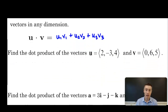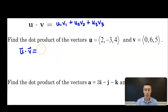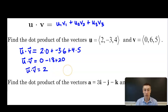Let's look at putting that into practice. Find the dot product of u = (2, -3, 4) and v = (0, 6, 5). The dot product u·v equals 2×0 + (-3)×6 + 4×5, which is 0 - 18 + 20, so u·v = 2. We started with two vectors, combined them using the first definition, and got an answer of 2.